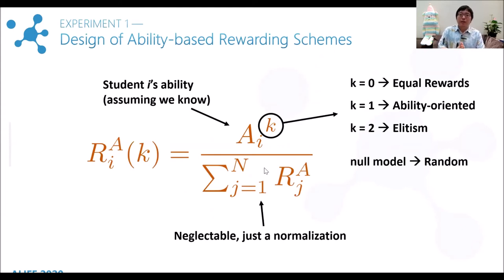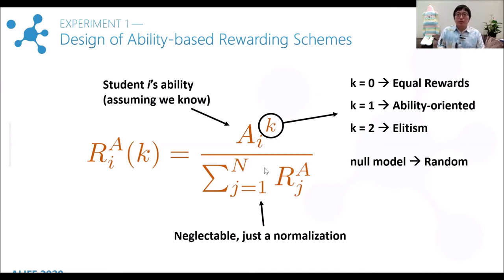Now let's enter the experimental part. In our first experiment, we tested the ability-based rewarding schemes. For each student i, he receives a reward that is his ability to the power of a parameter k. The denominator is just a normalization. The parameter k decides the rewarding type. When k equals 0, all students get equal rewards. When k equals 1, the reward is proportional to ability. When k is greater than 1, that is elitism at different degrees. In addition, we added a model that randomly distributed the rewards.